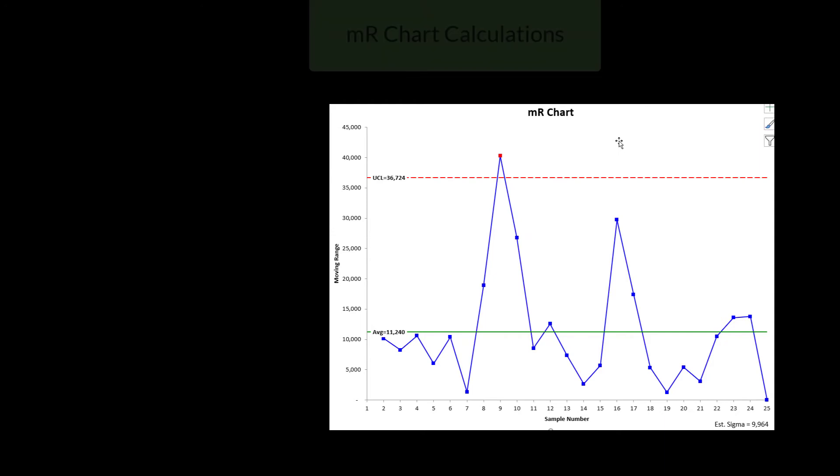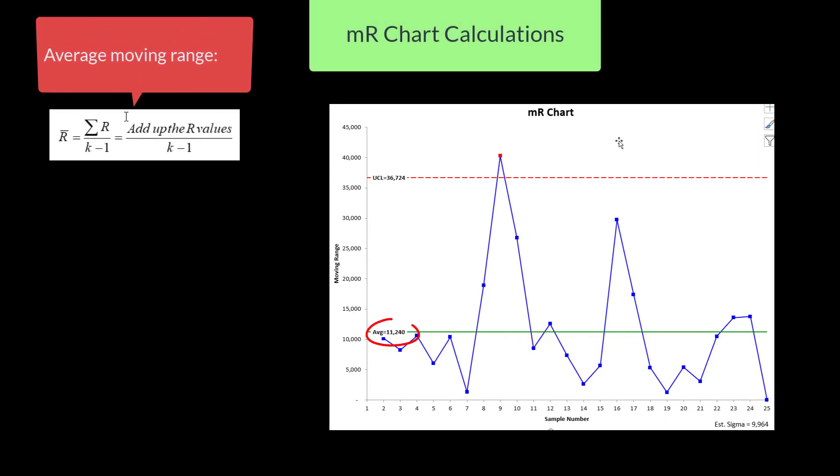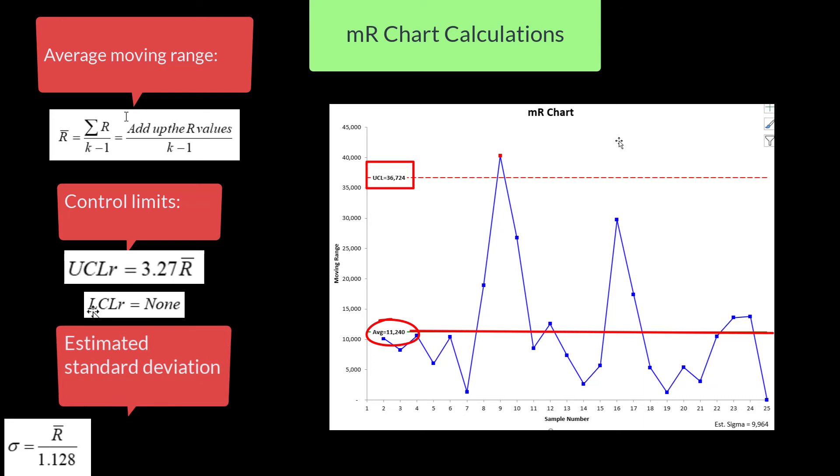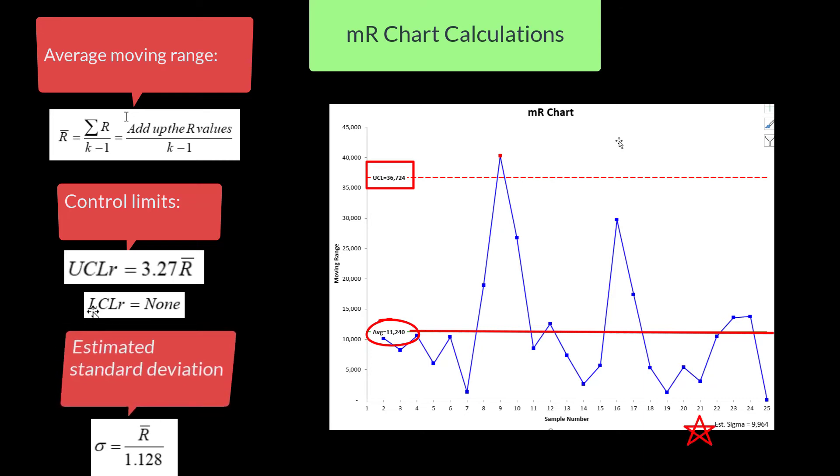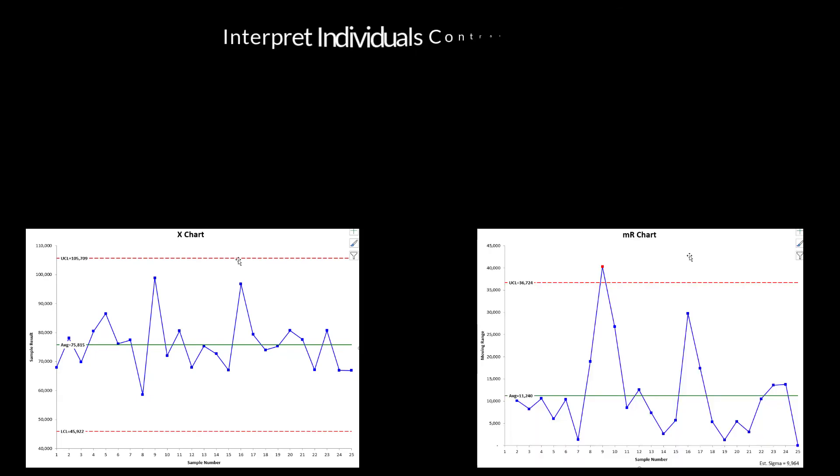Then with the moving range chart, we're going to calculate that average range. It's the average moving range. It's the sum of the range values divided by K minus 1, since there's one less data point for the moving range. The control limits, the upper control limit is 3.27 times R bar. There's no lower control limit with a moving range chart. And if it's in control, you can estimate the standard deviation or sigma as R bar divided by 1.128. And that's the value you use in your process capability analysis.